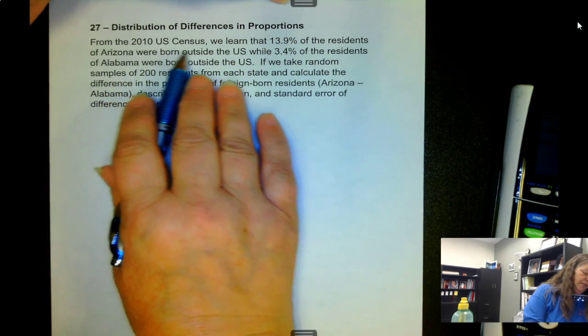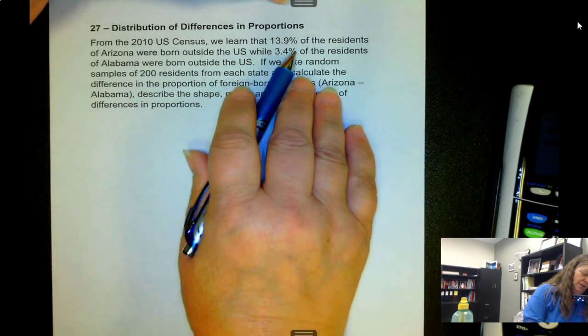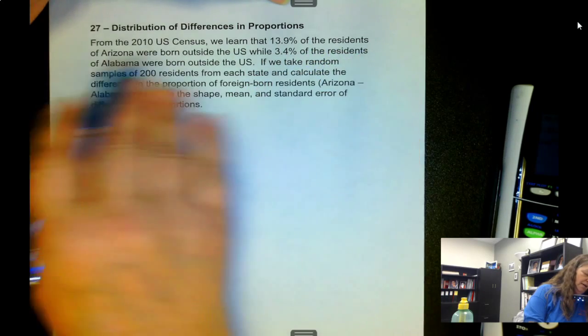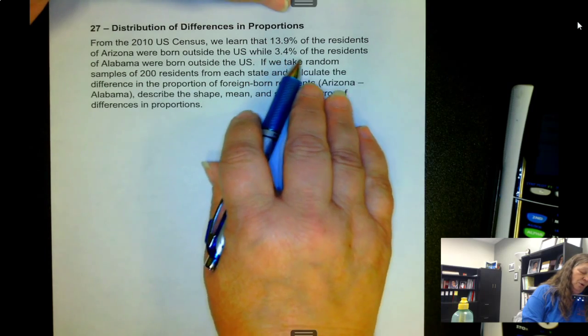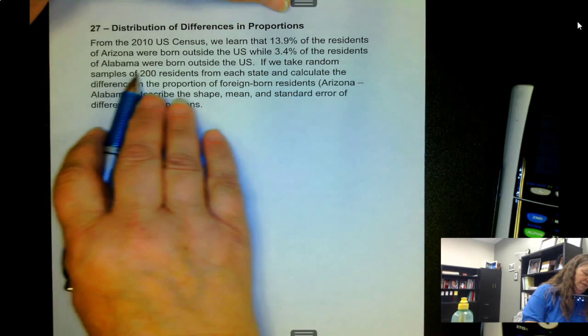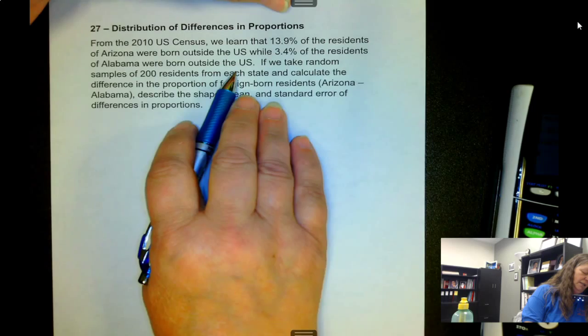So from the 2010 U.S. Census, we learned that 13.9% of the residents of Arizona were born outside the U.S., while 3.4% of the residents of Alabama were born outside the U.S.